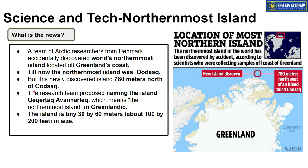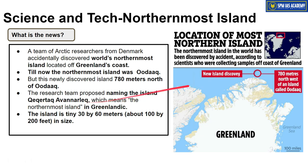This newly discovered island is approximately 780 meters north of Oodaaq Island. The researchers came across it by accident — what is called serendipity. So now, instead of Oodaaq, this newly discovered island called Qeqertaq Avannarleq — whose name is a bit difficult but should be remembered — will be the northernmost island. Qeqertaq Avannarleq means 'the northernmost island' in Greenlandic language. It is quite a small island — only 30 by 60 meters — and its highest peak is just 3 meters high. This island, recently discovered off the Greenland coast, is now the world's northernmost island, and from a prelims exam point of view, this question can be asked.